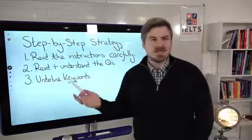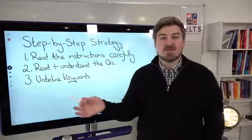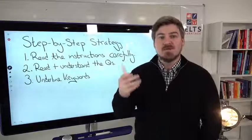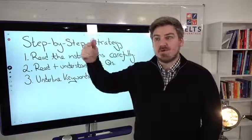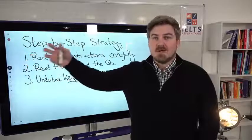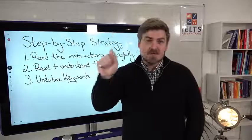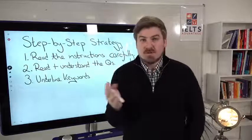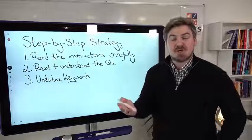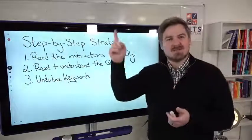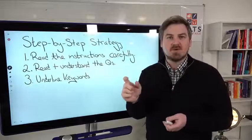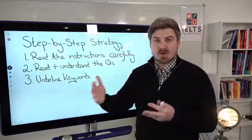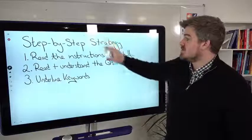Step number three, underline any keywords. What are the keywords? So it will differ from question to question, but the words that you think are important in order for you to get the correct answer. So you can underline them, circle them, whatever you do, or you don't have to do that. You can just look at them and understand these are the words that I need to be listening out for. These are the important words that are going to determine whether I get the correct answer or not.